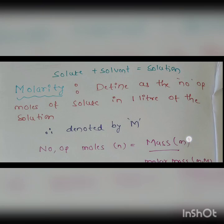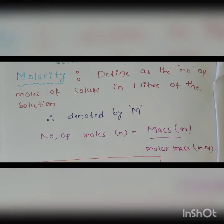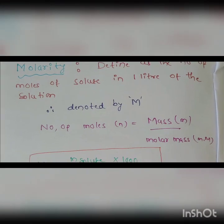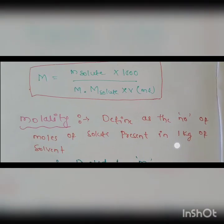Molarity is defined as the number of moles of solute in one liter of solution. Molarity is denoted by capital M. In mathematical form, the number of moles n = mass divided by molar mass. The formula for molarity is: M = (mass of solute × 1000) / (molar mass of solute × volume in mL).